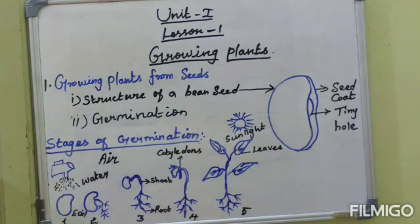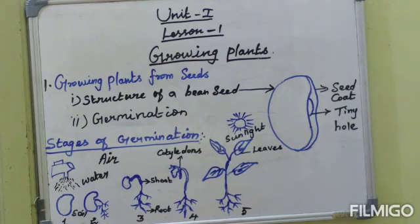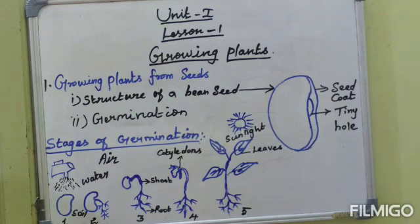Not all seeds grow into a new plant. Some seeds are destroyed by wind and rain. Some seeds are eaten up by birds and insects. While some seeds do not get the right conditions to germinate.